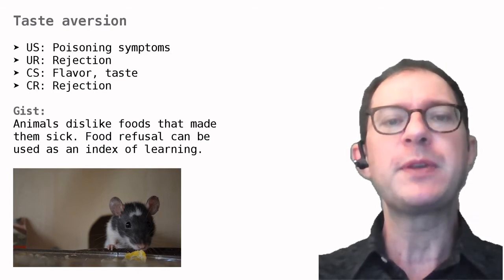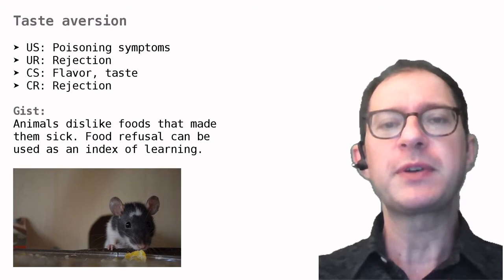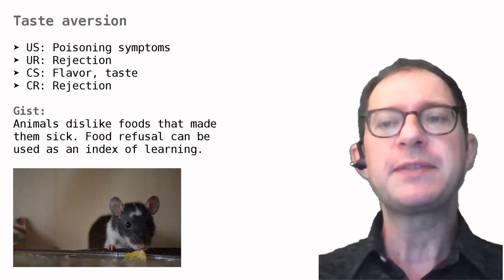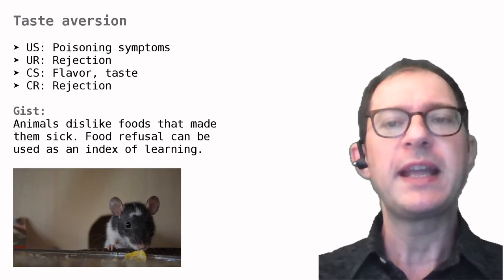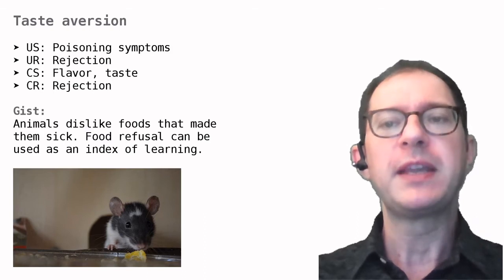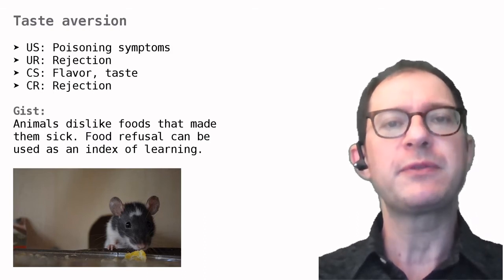Taste aversion learning has some unique features. First it works best with flavors. If you have an animal eat while a light is flashing or a sound is playing and then make the animal sick, the animal will not develop an aversion to the light or the sound. It will only learn to avoid the taste of the food.